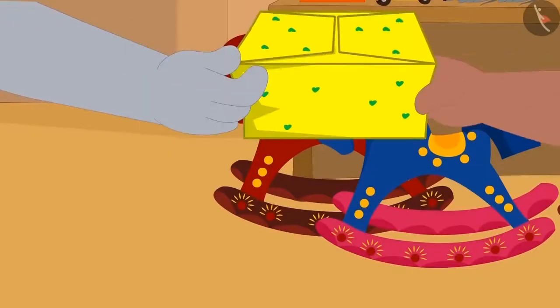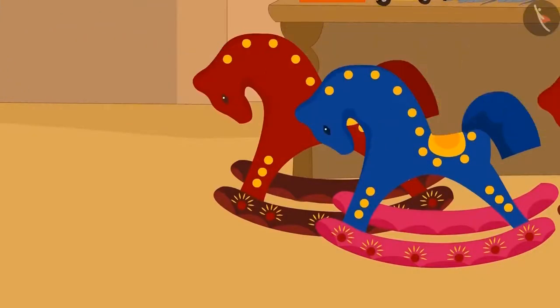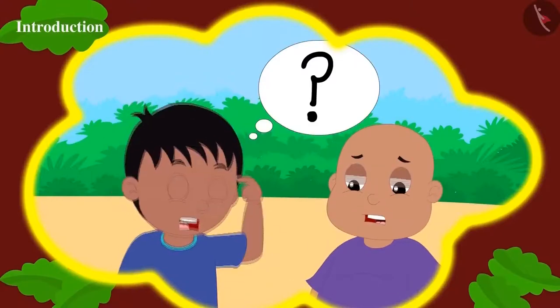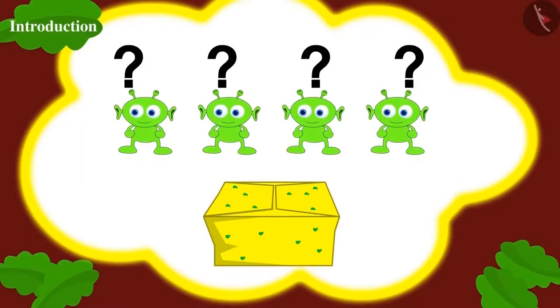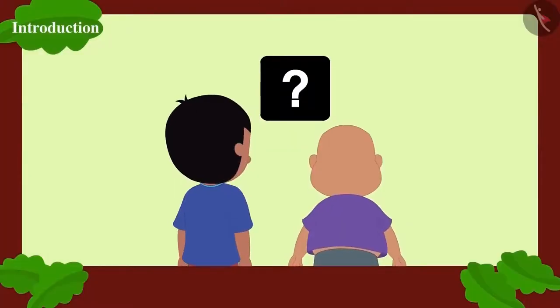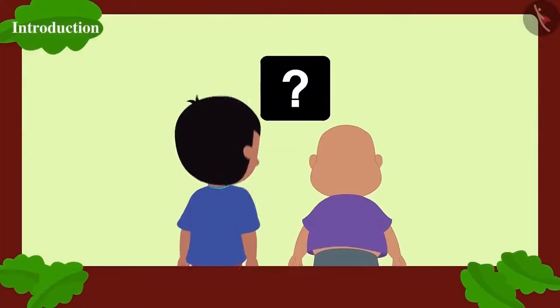They bought a box of 12 flower pots from Gaggu. Now they are thinking, if they have to divide the flower pots equally among all of Jeev's friends, how many flower pots will each friend get? Children, can you help Raju and Bablu to find answer to this?